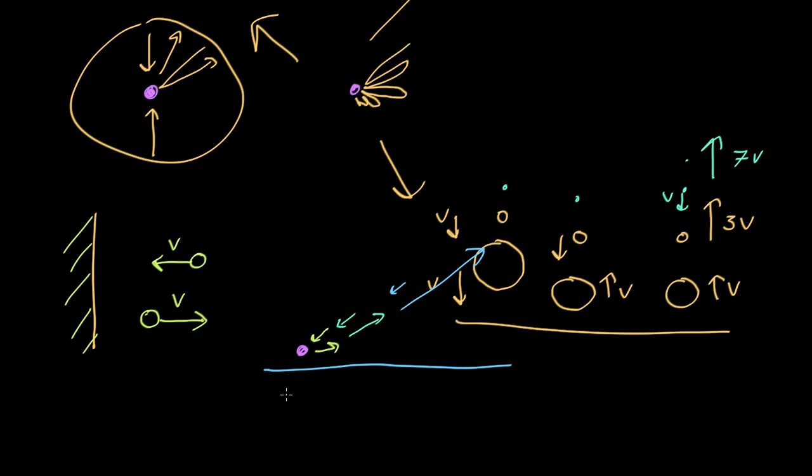So the amount of energy we're getting out has got to be much less than the total energy. So roughly speaking, it might only be like 0.1% or something like this. So instead of the 10 to the 47 joules we're talking about for the entire energy of collapse, we might only get a pathetic 10 to the 44 joules or something like this.